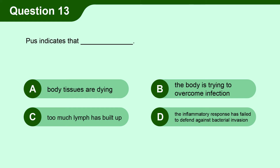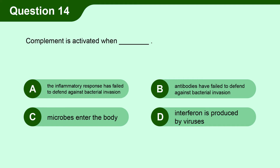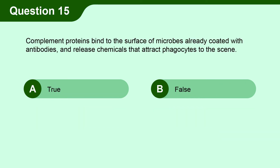Question 14. Complement is activated when: A. the inflammatory response has failed to defend against bacterial invasion, B. the antibodies have failed to defend against bacterial invasion, C. microbes enter the body, D. interferon is produced by viruses. Question 15. Complement proteins bind to the surface of microbes already coated with antibodies and release chemicals that attract phagocytes to the scene. A. True. B. False.